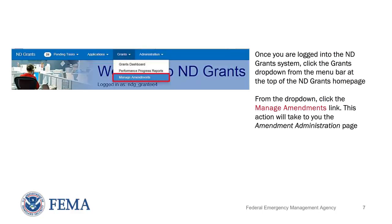You now understand the various types of amendments and the prerequisites for submitting them. Now let's get started in creating an amendment. Once you are logged into the ND Grants system, click the Grants drop-down from the menu bar at the top of the ND Grants homepage. From the drop-down, click the Manage Amendments link. This action will take you to the Amendment Administration page.